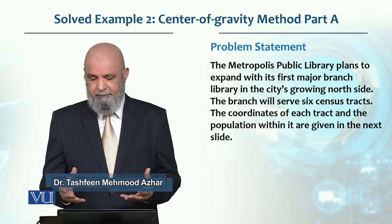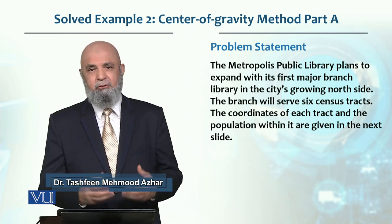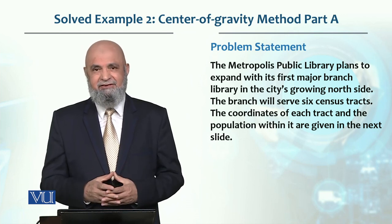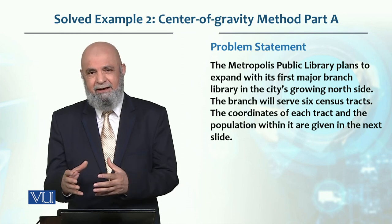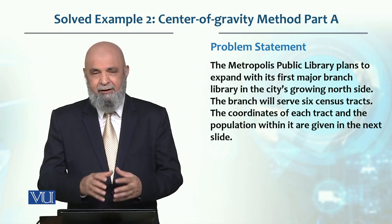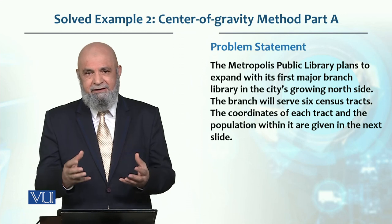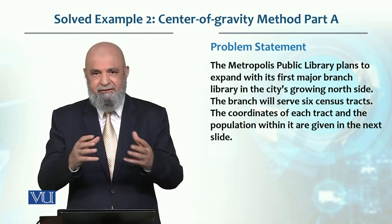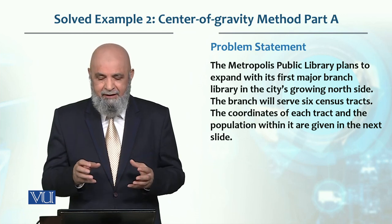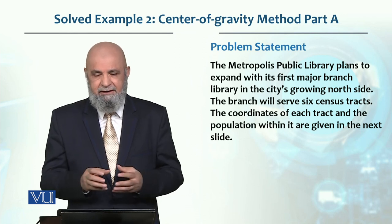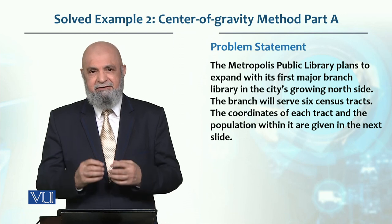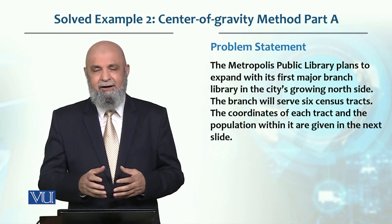Metropolis Public Library is planning to establish another library for six census tracts. They want to establish a central location to minimize the distance from different census tracts. Census tracts have the load defined by population.